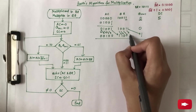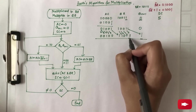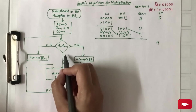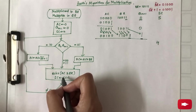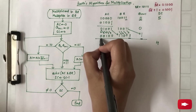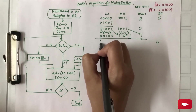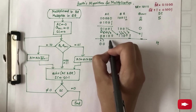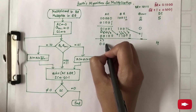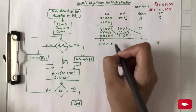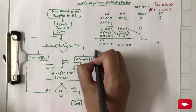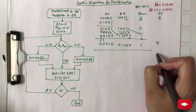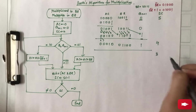Checking again the value of Q_N and Q_N+1, it is 1,1 — that means a simple arithmetic shift right has to be done. The result shifts to: 0, 0, 1, 0, 0, 1, 1, 0, 0, 1. After this, another step is completed and the counter is decremented.